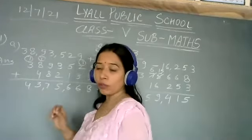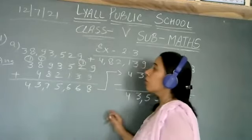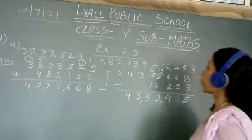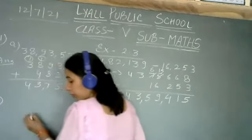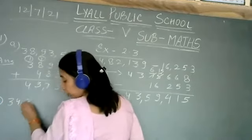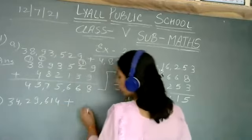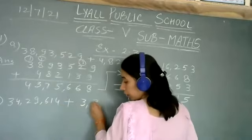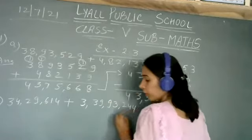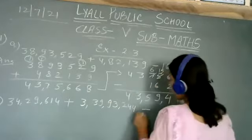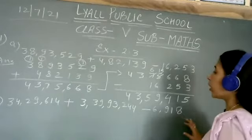Part B, you can solve on your own. Part C, you can solve on your own. And part D, we will solve here. The question D is: 34,29,614 plus 3,59,93,244 minus 6,918.